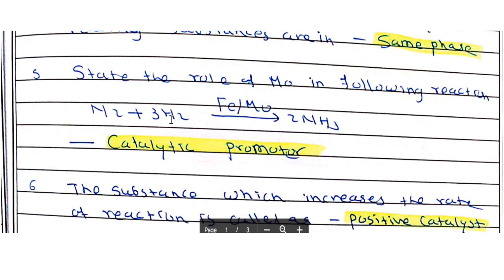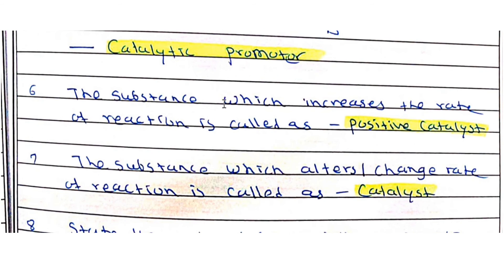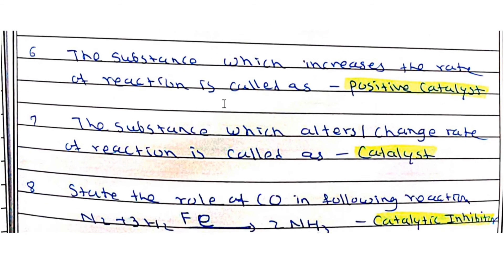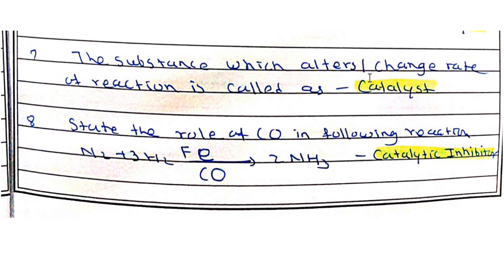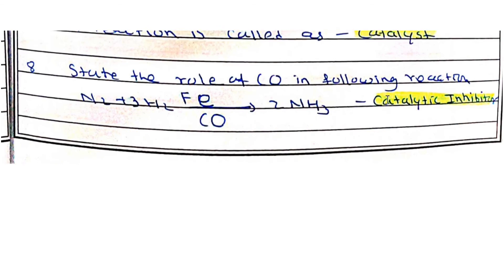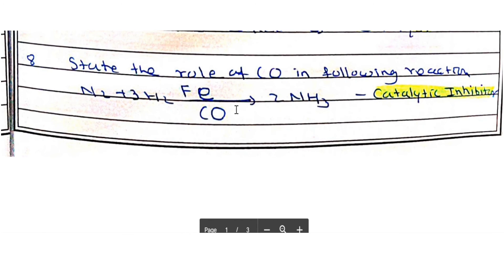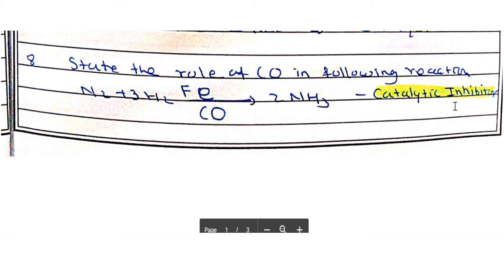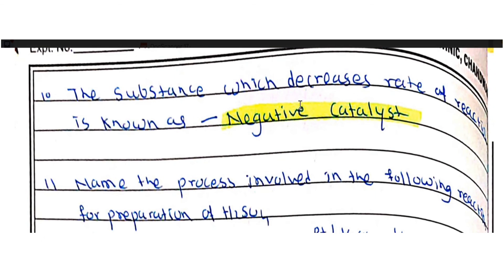In Haber's process, both nitrogen and hydrogen are in the gaseous phase while the catalyst iron is in the solid state, making it heterogeneous catalysis. A substance which increases the rate of reaction is known as a positive catalyst. A substance which alters the rate of reaction is known as a catalyst.